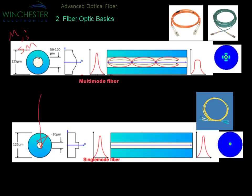From the outside the fiber looks the same, so that's why the fiber is colored differently between single-mode and multi-mode. Generally, 62.5 micron is orange, and 50/125 can be orange, or the more modern fibers are a blue or light blue.